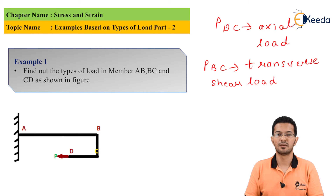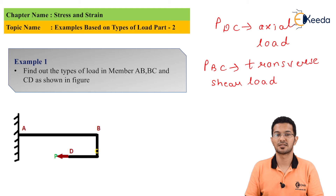For member AB, load P is parallel to the surface but does not pass through the longitudinal axis. Therefore, load P is eccentric axial load.